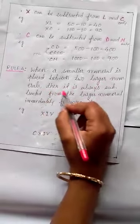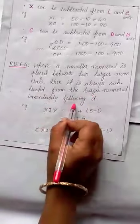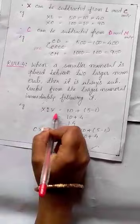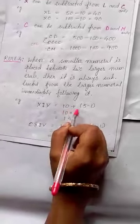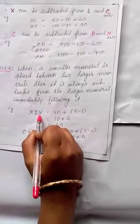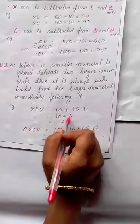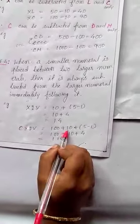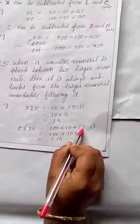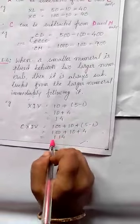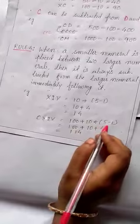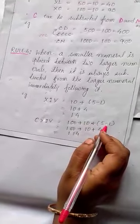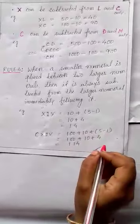Rule 4: When a smaller numeral is placed between two larger numerals, it is always subtracted from the larger number immediately following it. For example, XIV means X is 10, then IV is 5 minus 1 equals 4, so 10 plus 4 equals 14. Another example: CXIV means 100 plus 10 plus 4 equals 114.